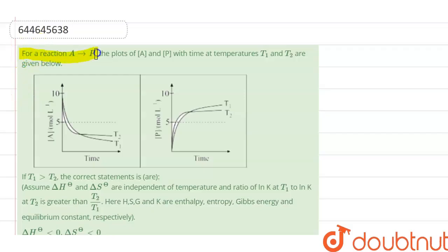Our question is: for a reaction A to P, the plot A and P with time at temperature T1 and T2 are given below. If T1 is greater than T2, the correct statement is, assume that delta H naught and delta S naught are independent of temperature, and ratio of log K at T1 to log K at T2 is greater than T2 upon T1.